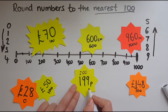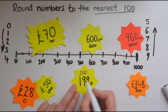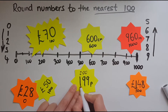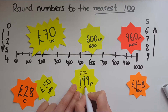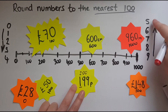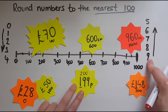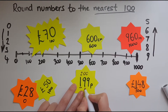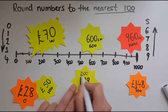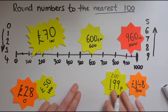Now let's look at 199. Rounding to the nearest 100 means we locate the hundreds digit, then look at the digit to its right — we've got a nine. That nine is in the digits that mean we round up: five, six, seven, eight or nine. Since it's a nine, we're going to round up to 200.